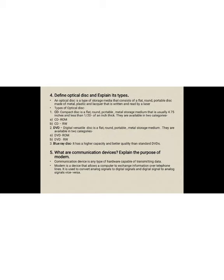Next question: what are communication devices? Explain the purpose of a modem. A communication device is any type of hardware capable of transmitting data. A modem is a device that allows a computer to exchange information over telephone lines. It is used to convert analog signals to digital signals and digital signals to analog signals, and vice versa. You also need to draw the diagram of the modem along with this answer.